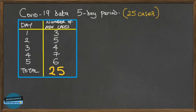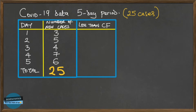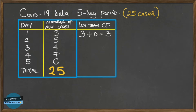How do we calculate less-than cumulative frequency? We want the cumulative frequency for day one: we had three cases, and there were zero cases before day one, so three plus zero gives us three. For day two we had five cases; the cumulative frequency is five plus the three from day one, giving us eight. It's just forming an accumulation — that's cumulative frequency.